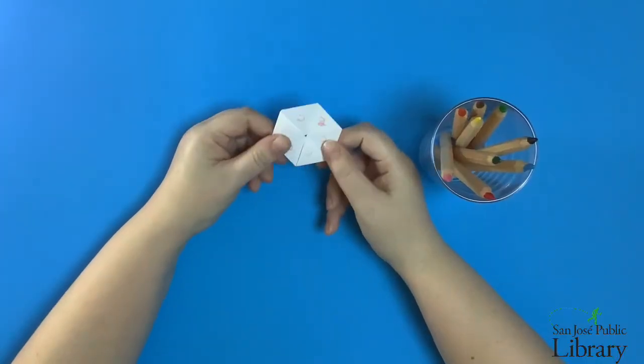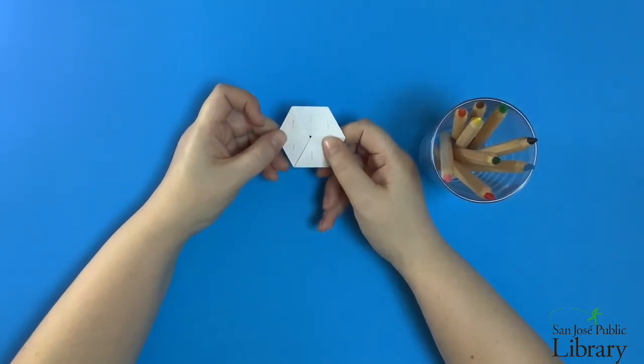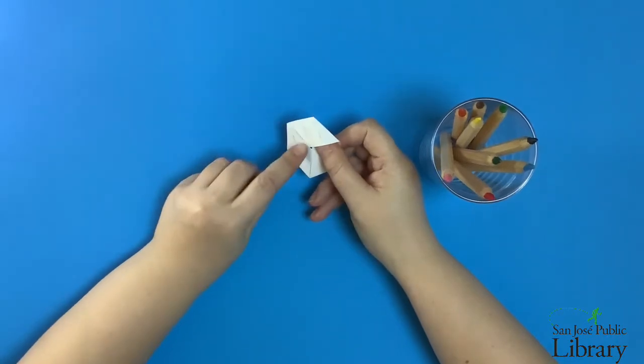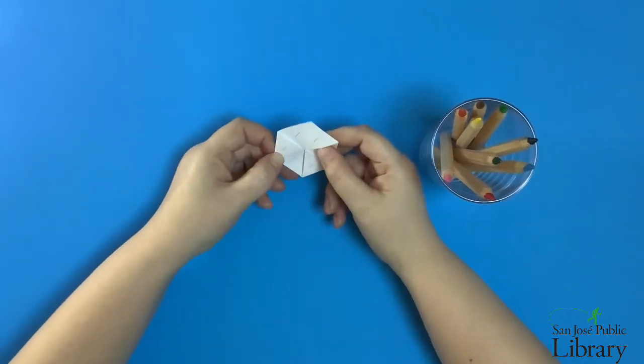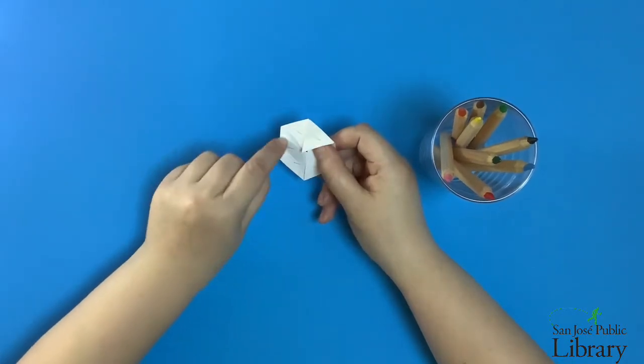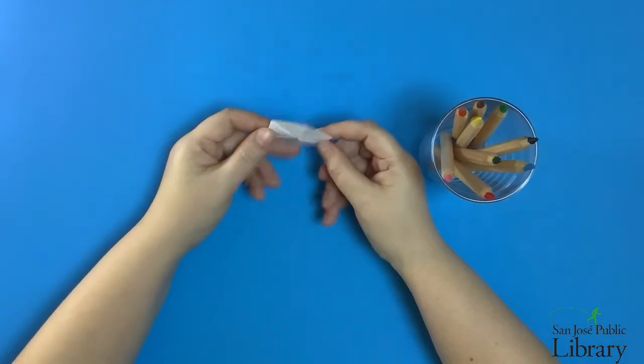So how do you know you have a good hexaflexagon? Well, I've labeled the sides one and two here and one of the ways that I can tell I have a good hexaflexagon is that I can see that there's a parallelogram for every loop of paper so I can sort of slide my thumb into these loops of paper and trace the parallelogram on each of them.